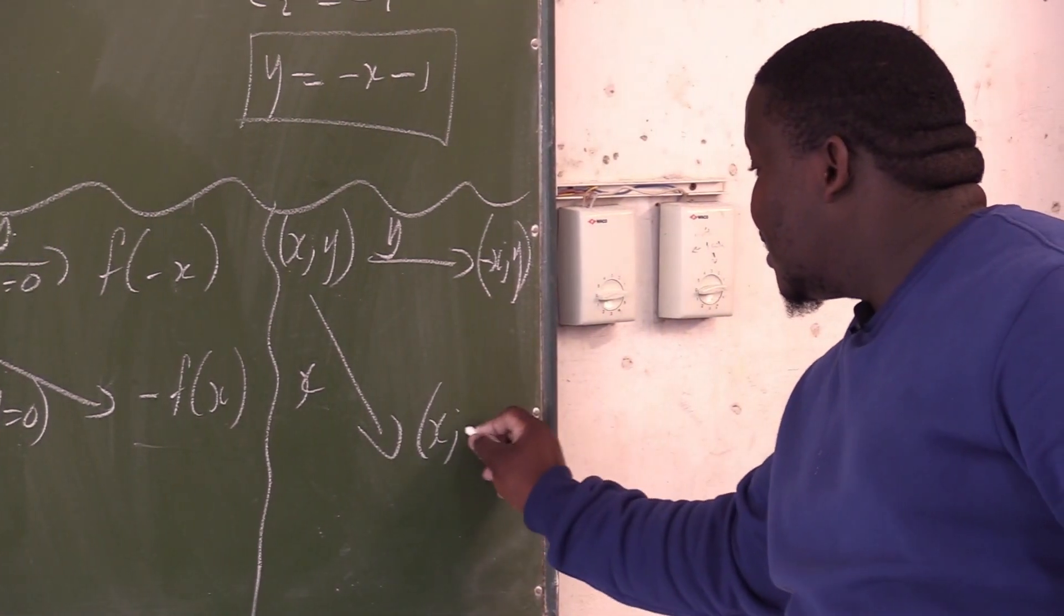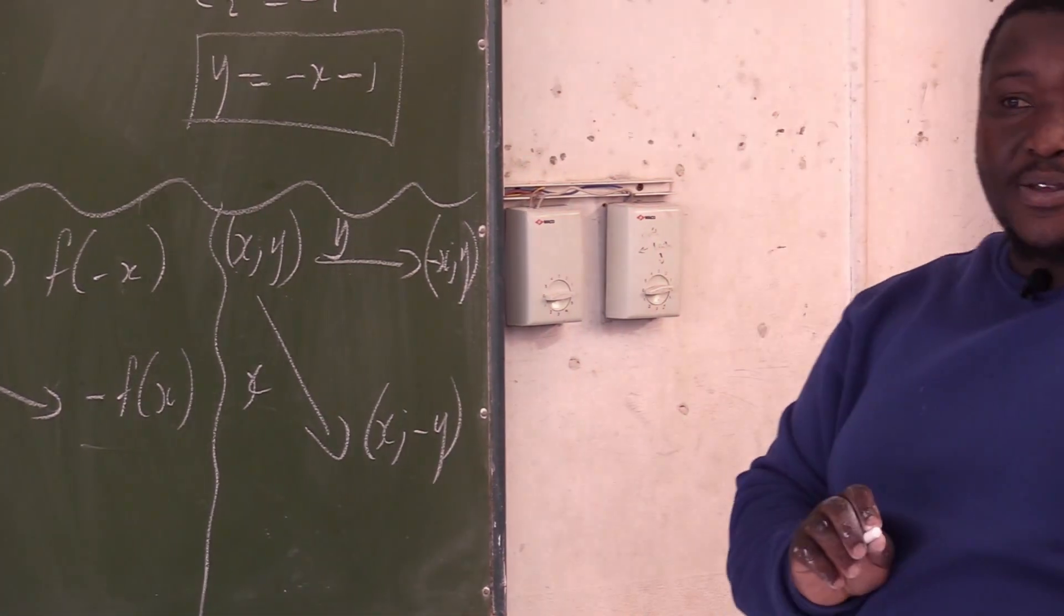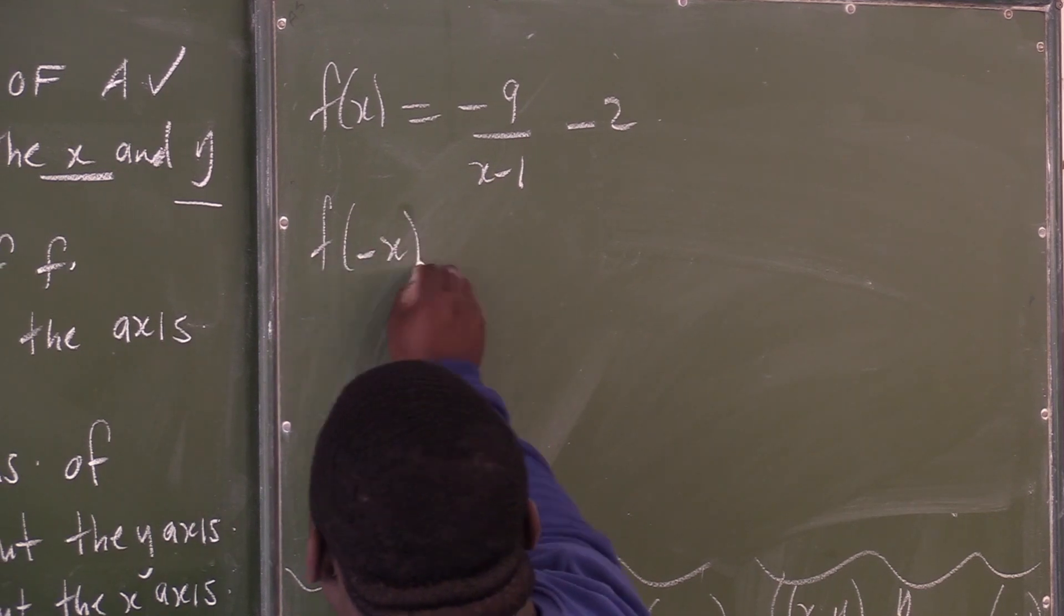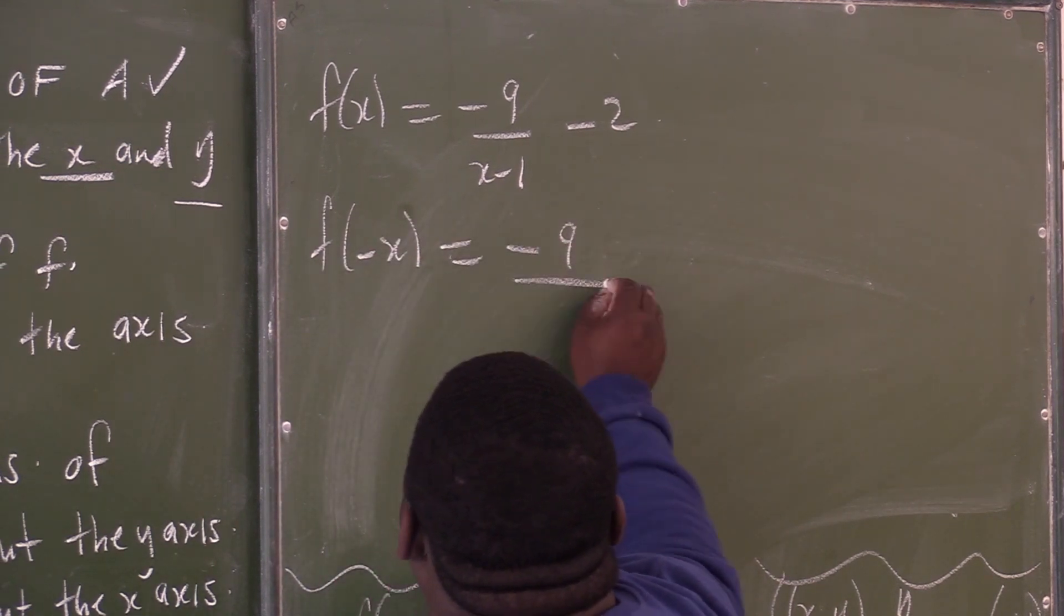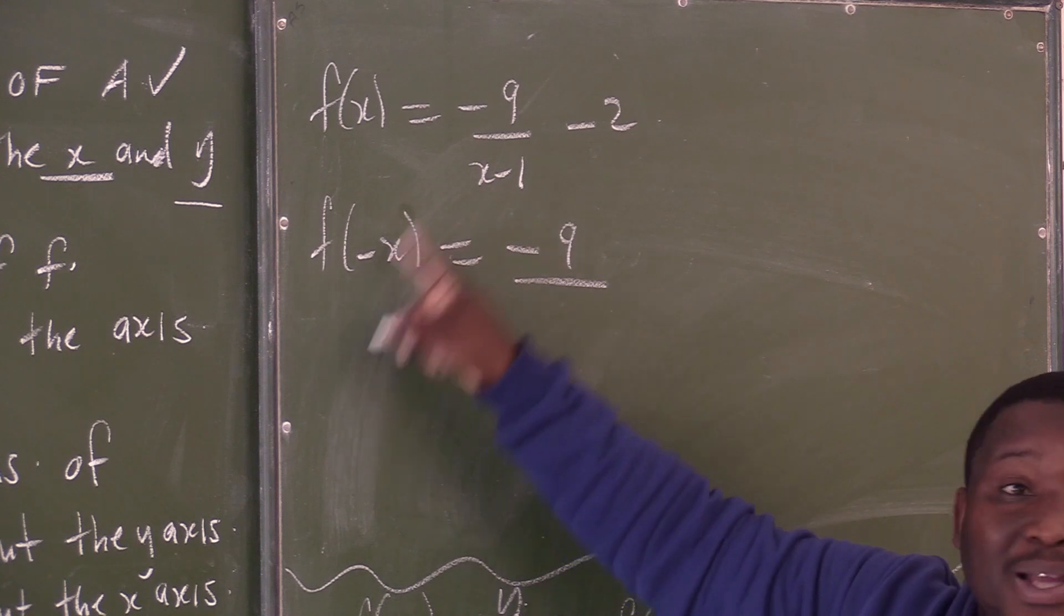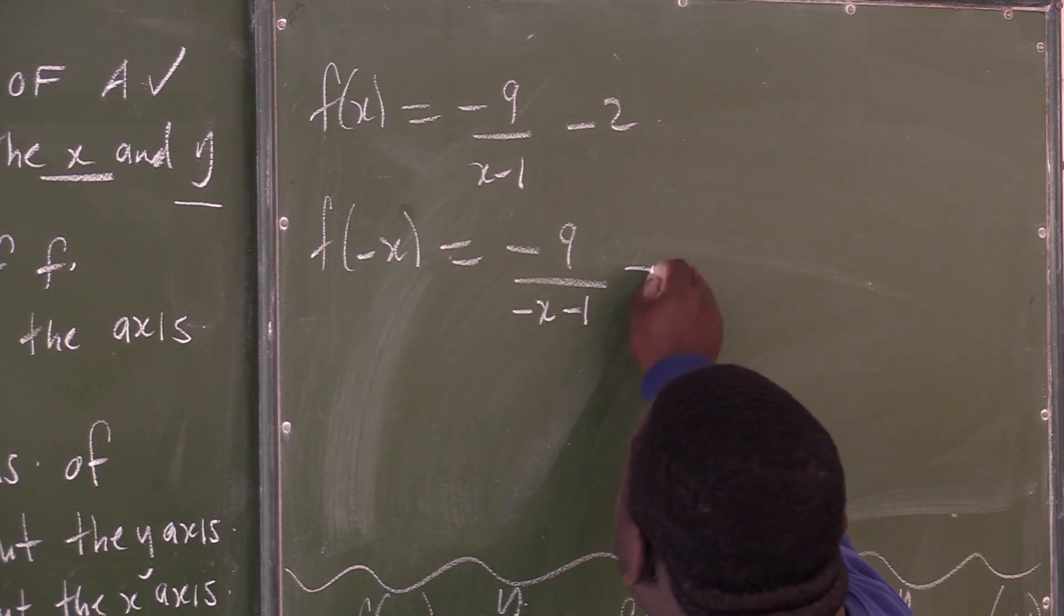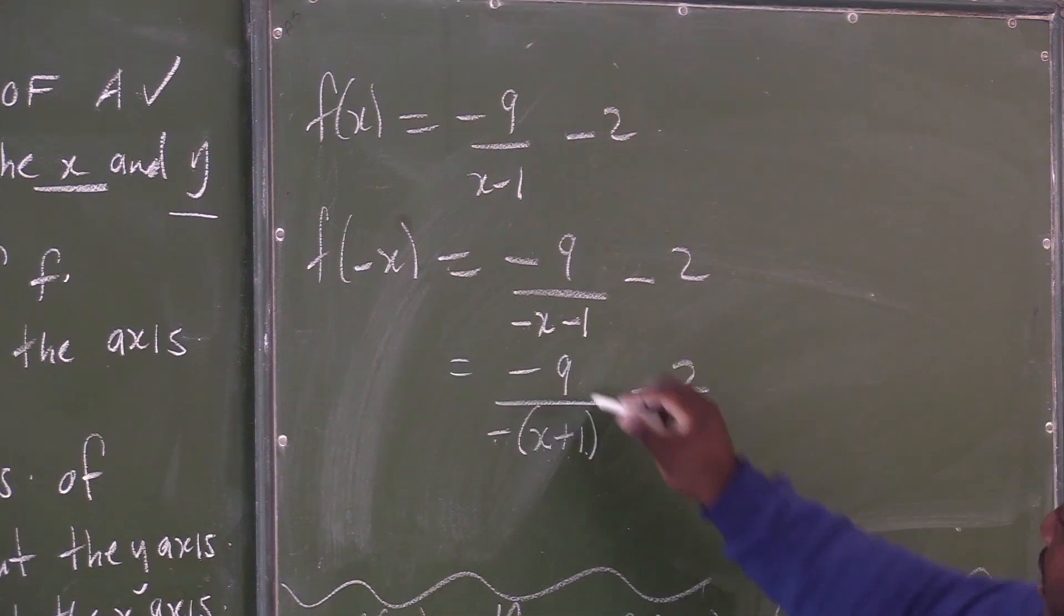Is it x and negative y? Let's reflect this equation across the y-axis. F of negative x. This is minus 9 over negative x minus 1 minus 2. You can say negative divided by negative.